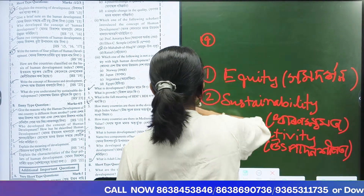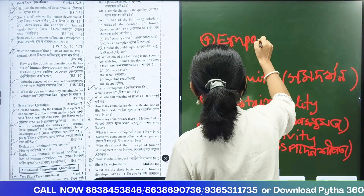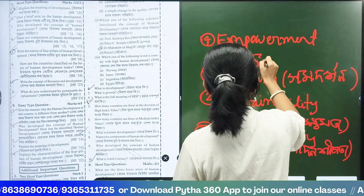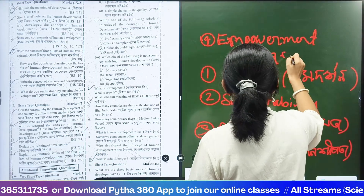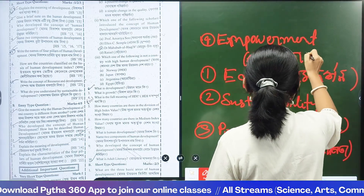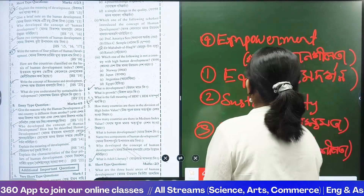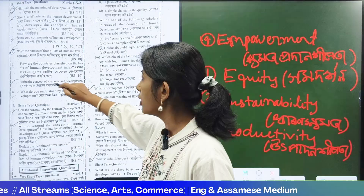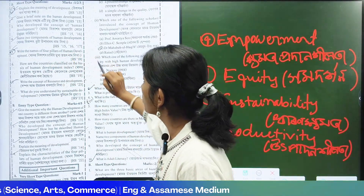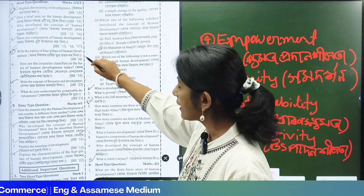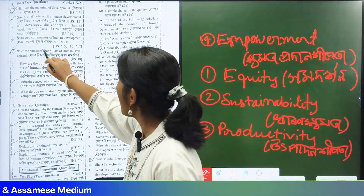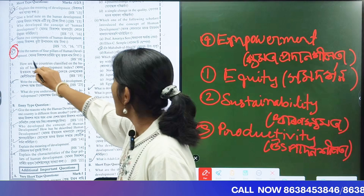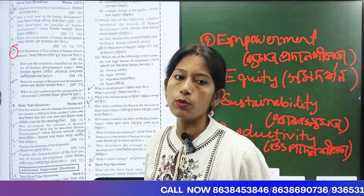Empowerment — that is what the sign number means. The next question: you have to write the names of the four pillars of human development.